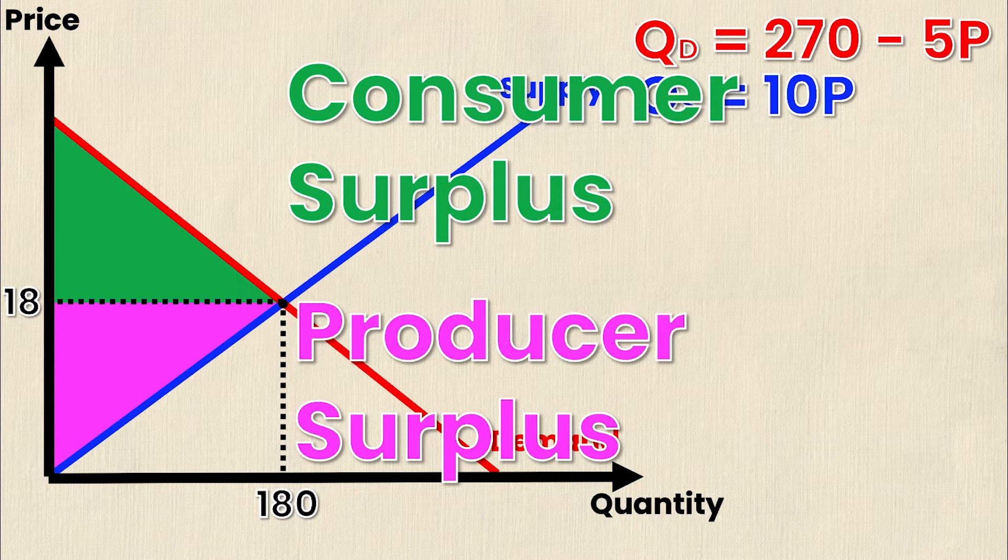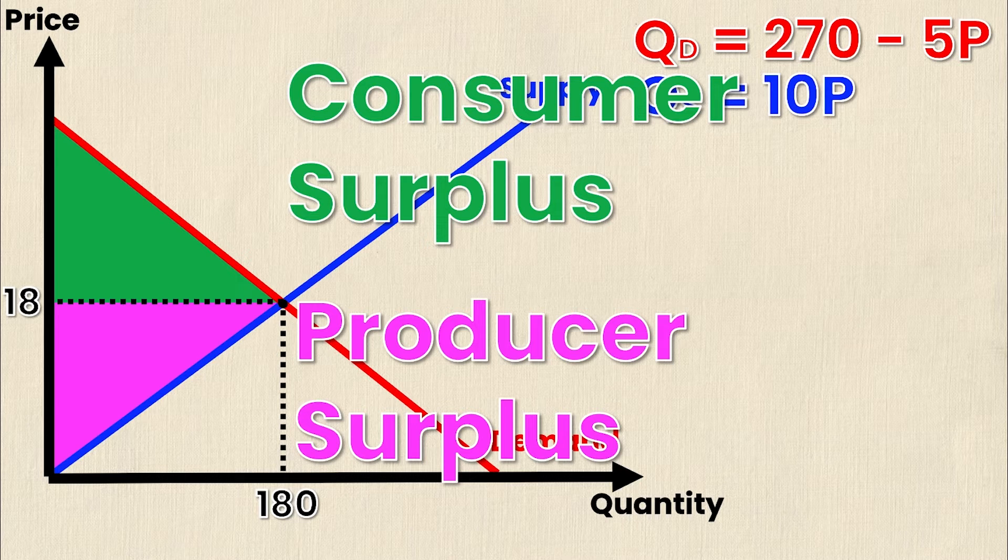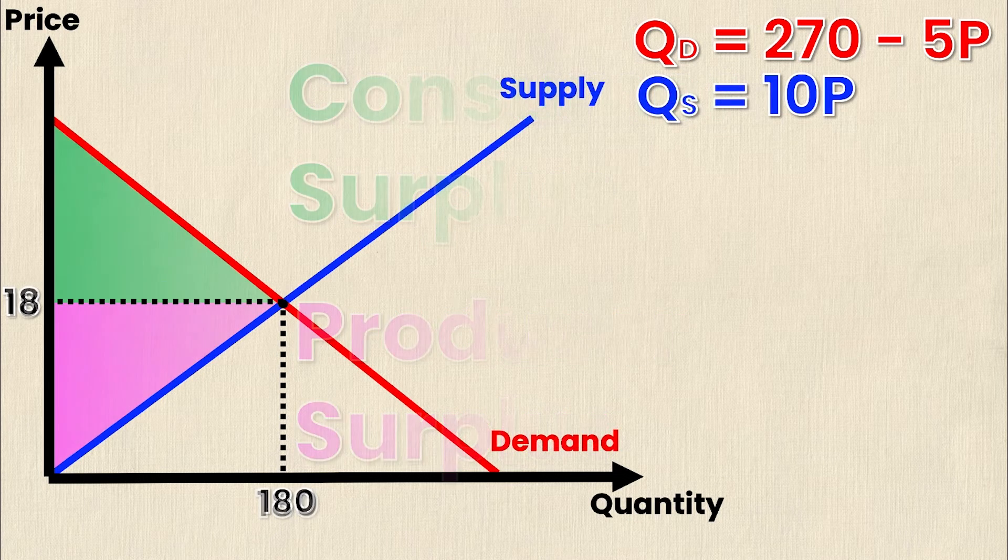However in this example the market is in equilibrium, but what happens if the market isn't in equilibrium? Well in that case we would experience something called a deadweight loss, and formally this is just a loss in the total surplus when the quantity traded is less than the competitive equilibrium. So if Q traded on the market in this case is less than 180. Well when would that happen? One example, the example we're going to explore today, is if the government imposes something called a price floor.